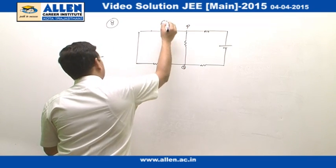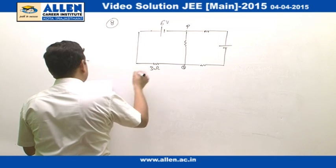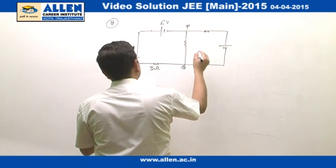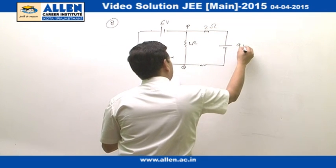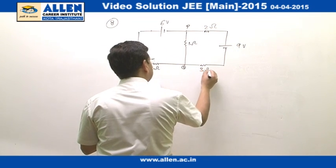This is a battery of 6 volt, we have got a resistance of 3 ohm, this is 1 ohm, this is 2 ohm, this is 9 volt and this is 3 ohm.